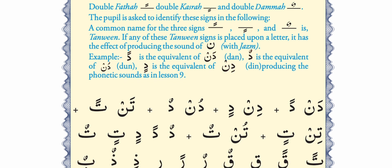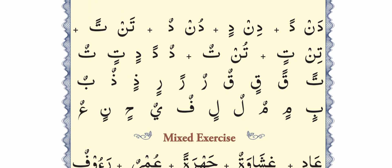For example, if dal has fatha it is read as 'da', but when it has double fatha it is read as 'dan' — the noon jasm sound is added. Let us read a few examples: dan, dan, din, din, dun, dun, tan, tan, tin, tin, tun, tun.